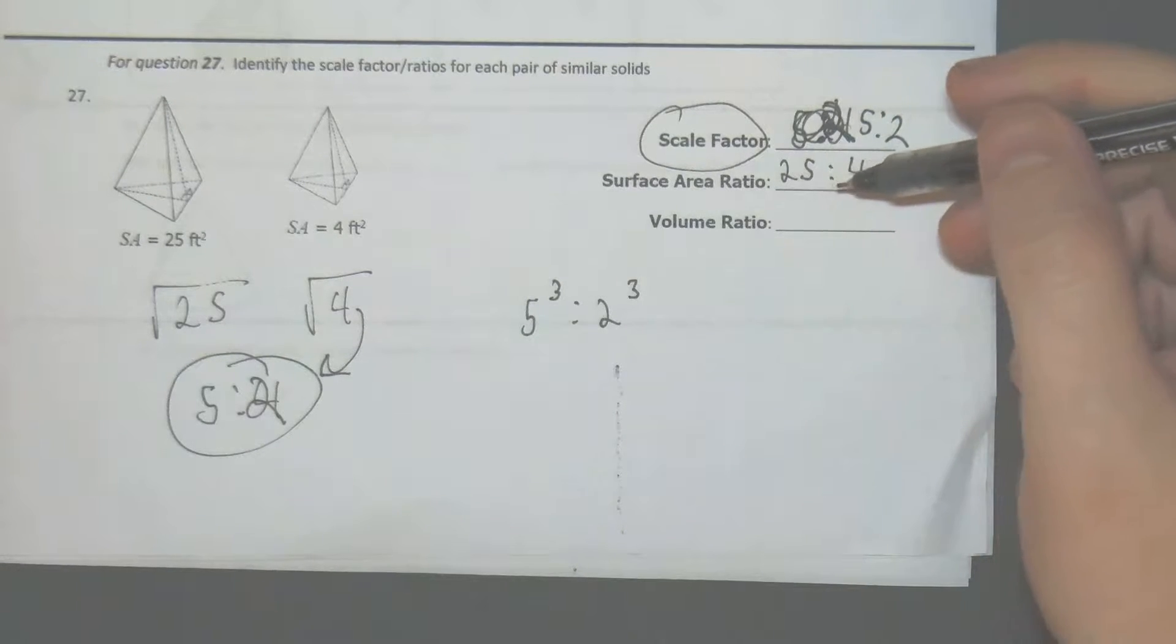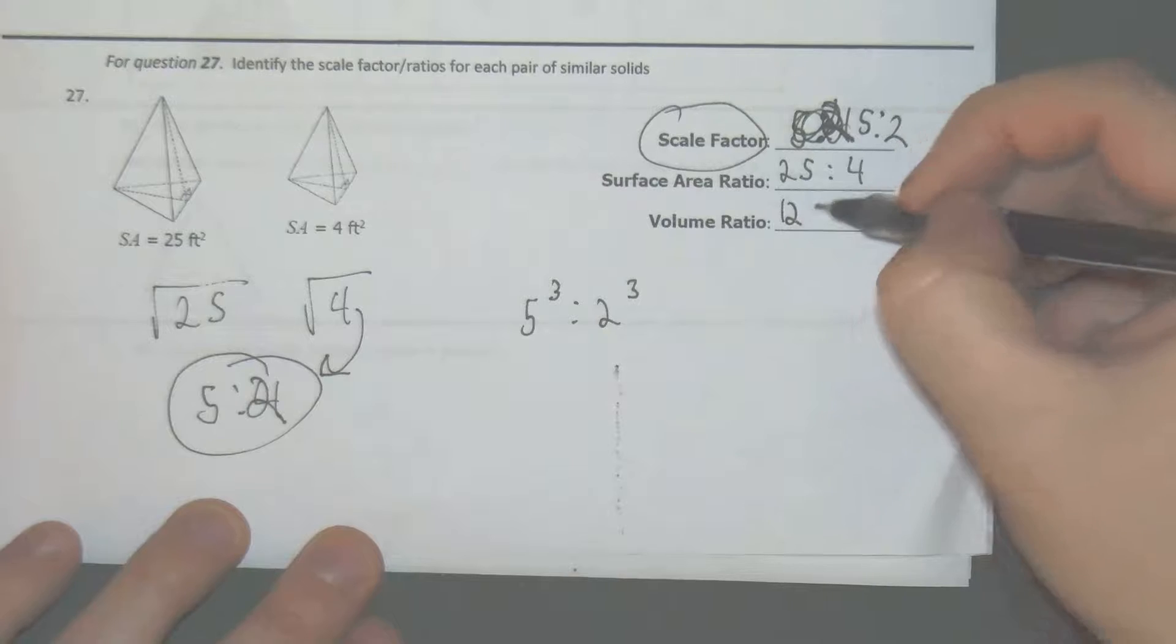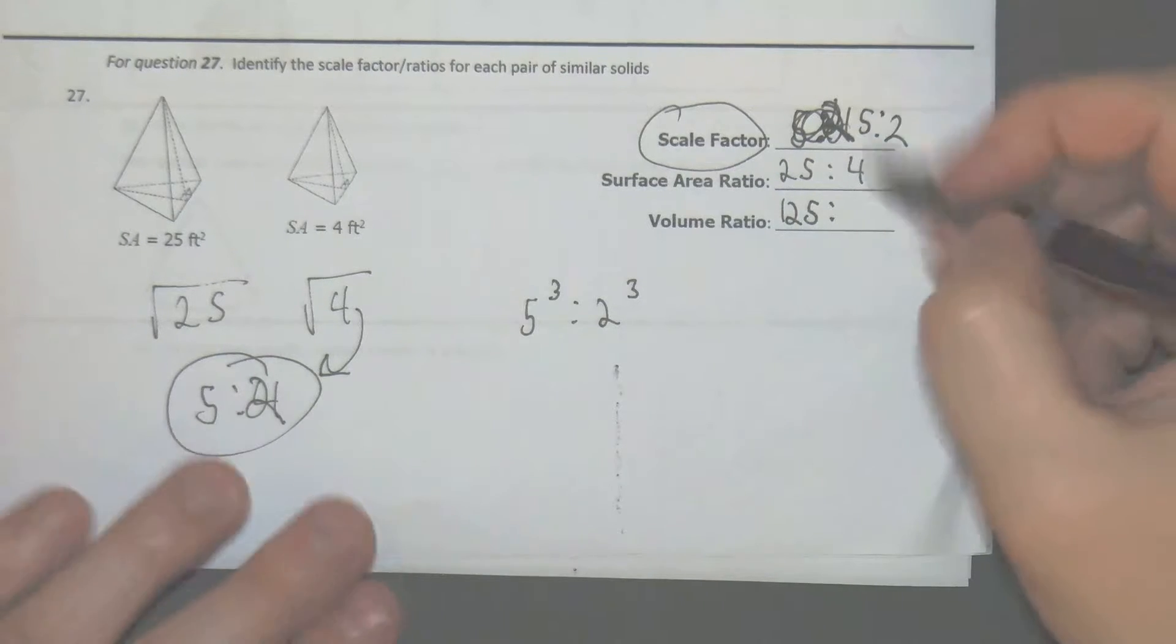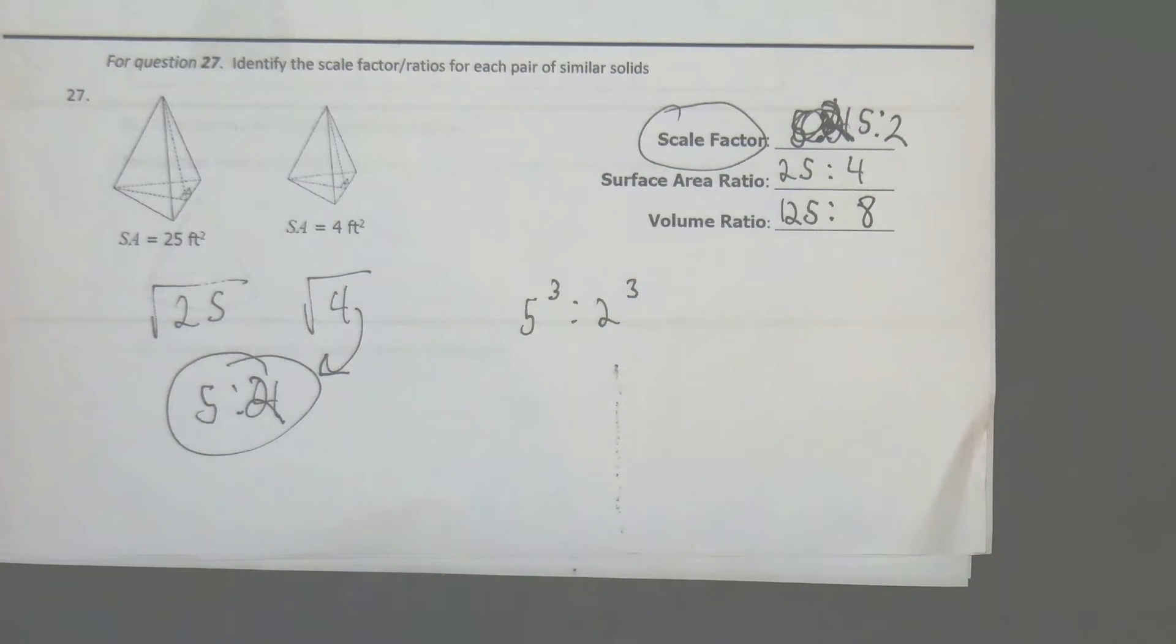The volume ratio would be 5 times 5 with 25, 125. 4 times 4, 16, or 2 times 2 is 4, and then 2 times would be 8. So our volume ratio here would be 8.